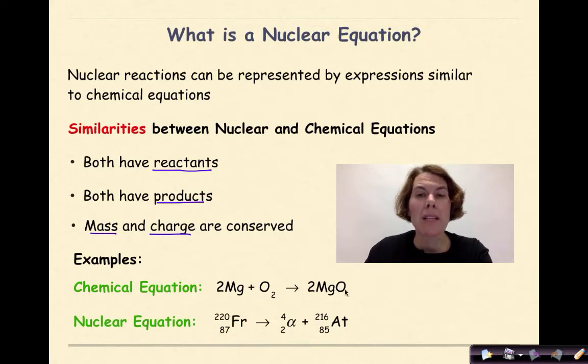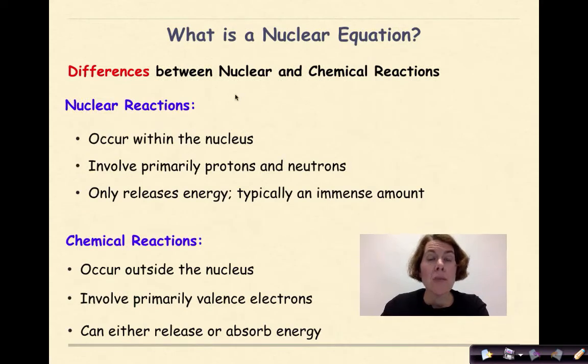So here's an example: a chemical equation like 2Mg + O₂ → 2MgO. A nuclear equation: francium-220 will decompose into an alpha particle and astatine-216. We see reactants here, we see products here, we see that things are balanced.